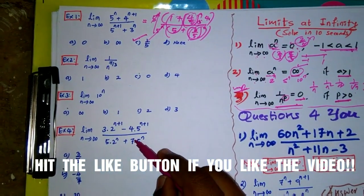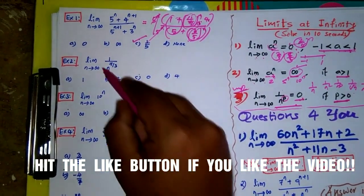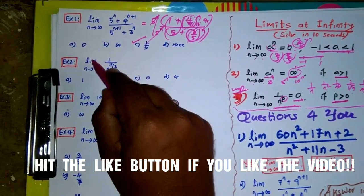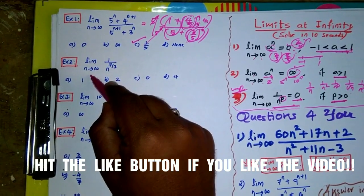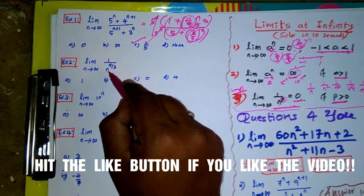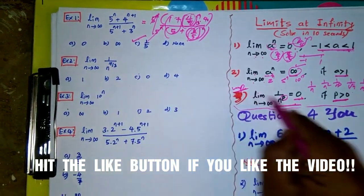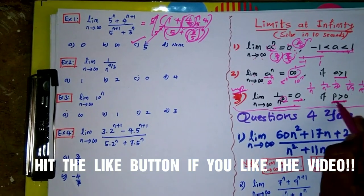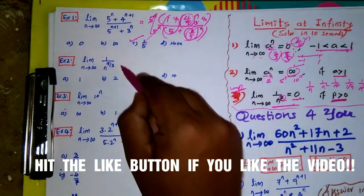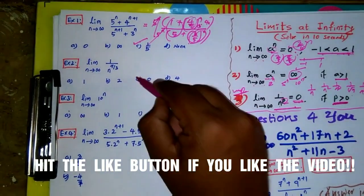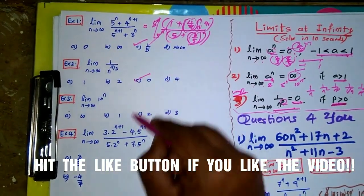Example number 2: limit n tends to infinity of 1/n^(7/3). This is of the form 1/n^p where p = 7/3 > 0. By Result 3, the answer is directly zero.